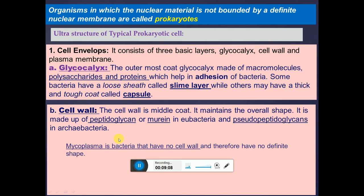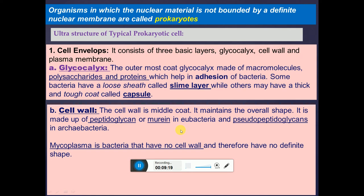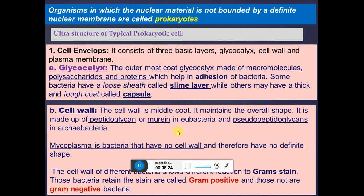One exception regarding the cell wall is mycoplasma — bacteria that have no cell wall and therefore no definite shape. The cell walls of different bacteria show different reactions to the Gram stain. Bacteria that retain the stain are called Gram-positive, and those that do not are called Gram-negative. These form two large groups of bacteria.